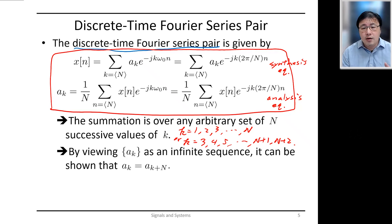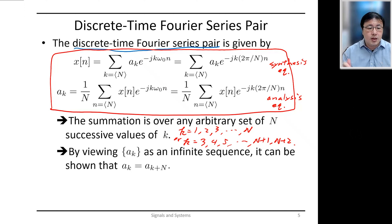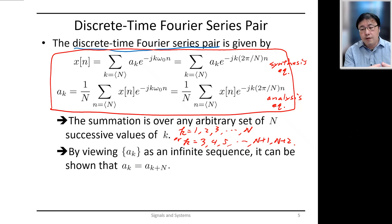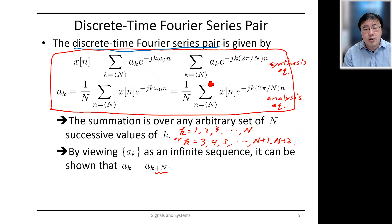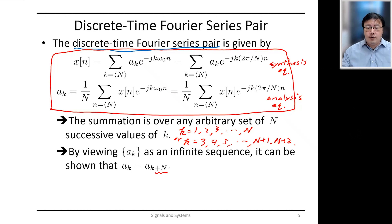When you go beyond a range of N consecutive values, the terms start to repeat. So for convenience, we can view the sequence of Fourier series coefficients as an infinite sequence that is periodic with period capital N. Each time we use the synthesis equation, we only take N consecutive values of the coefficients, but viewing the full sequence reveals that it is actually periodic.